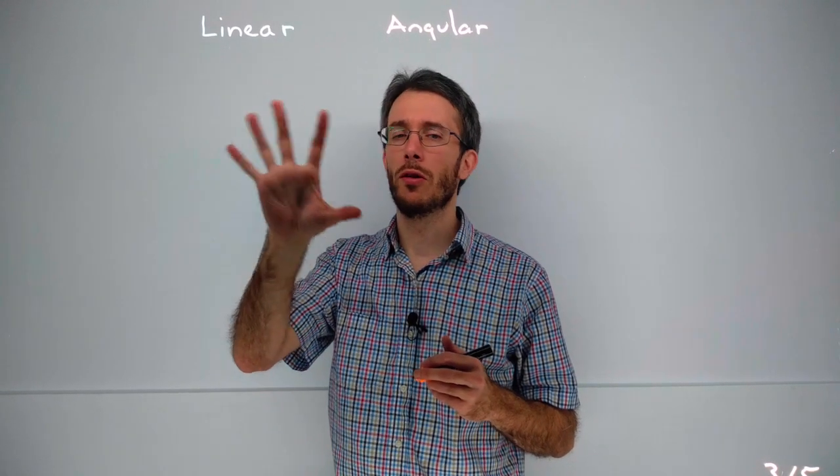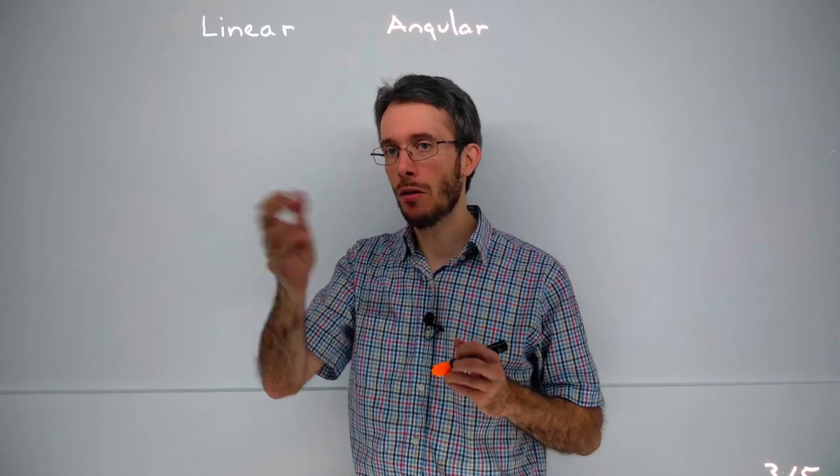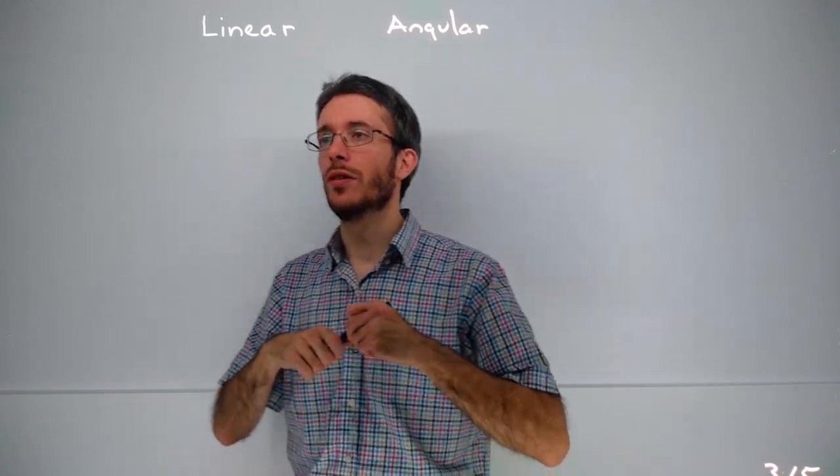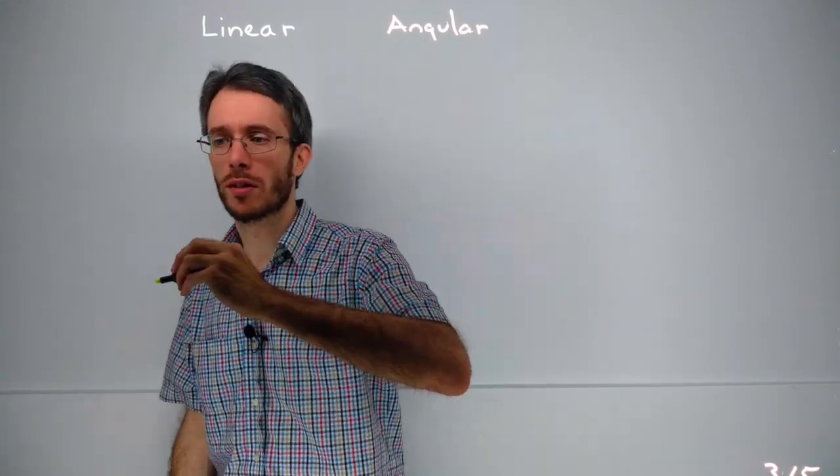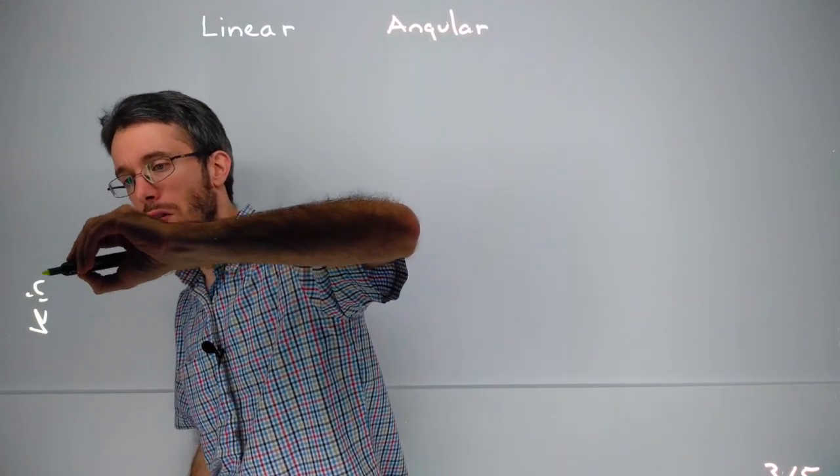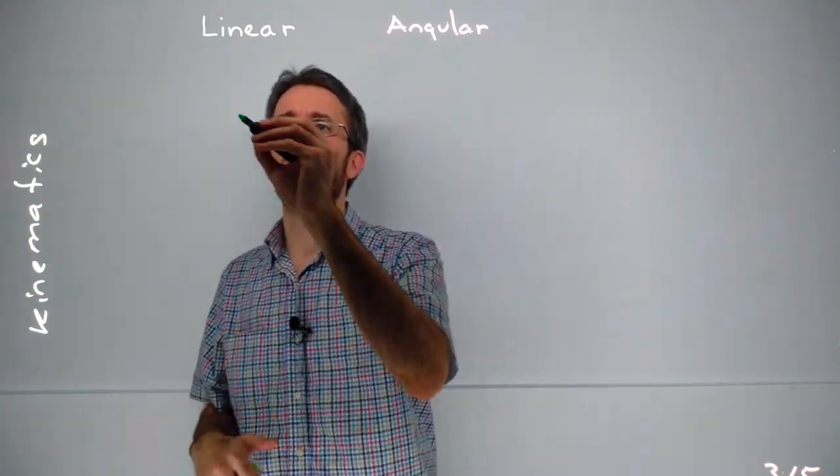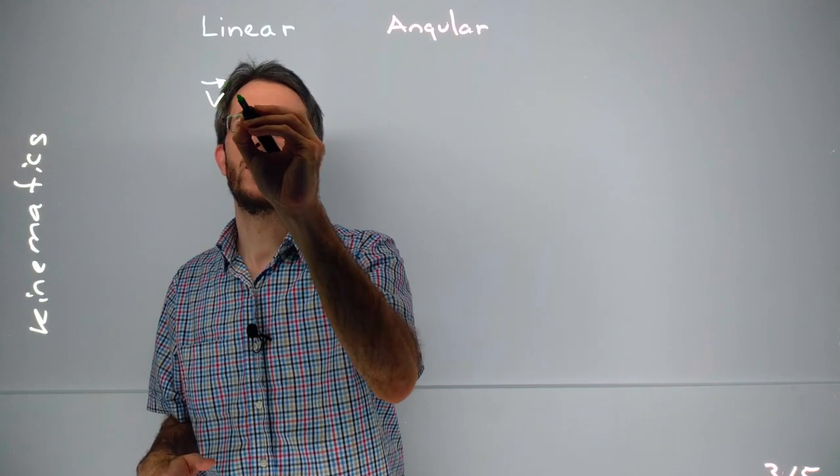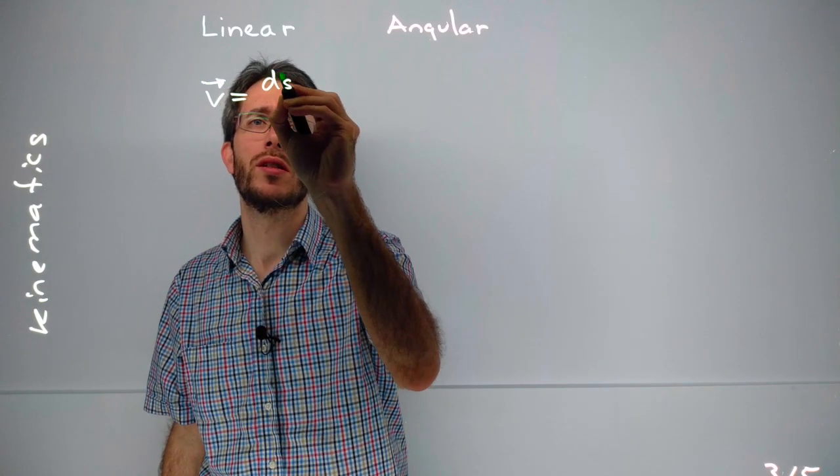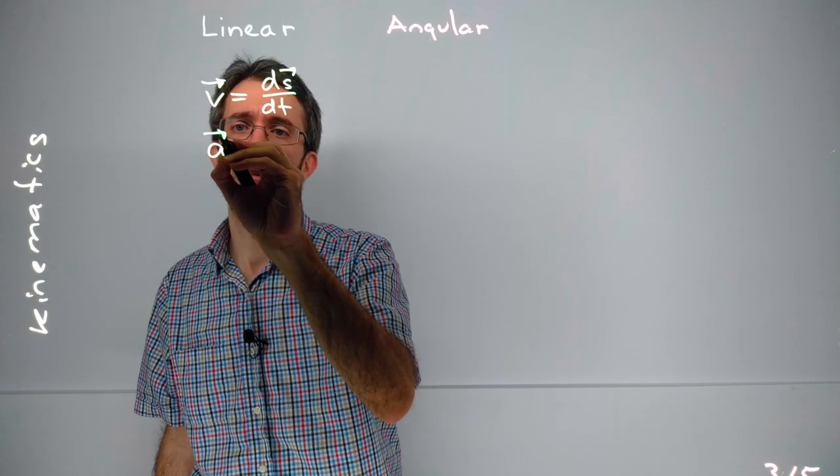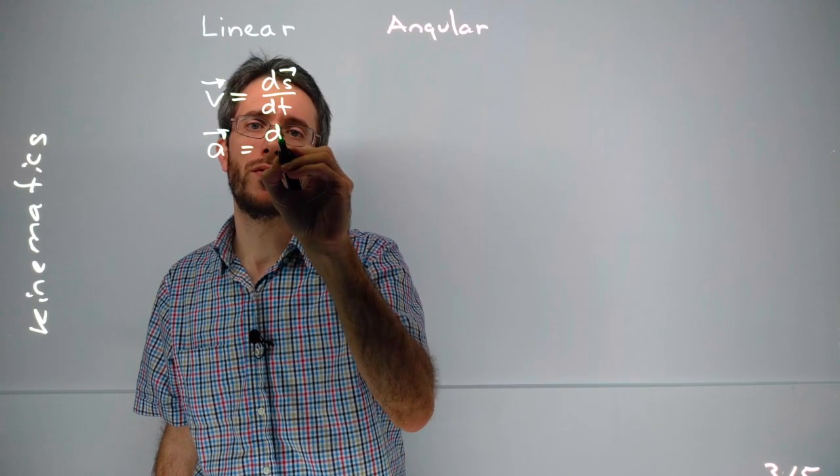On our third sheet, we're going to look at how we describe how certain things are moving. And we're going to be using kinematics for this. So the third sheet is going to be kinematics. And what we have here is first the basic definitions, that velocity is the derivative of position dS/dT. And the acceleration, this is the derivative of velocity.